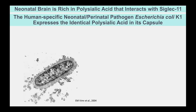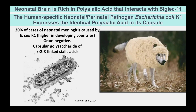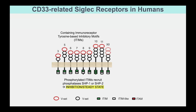A human-specific pathogen called E. coli K-1 — not the garden variety E. coli, but the special K-1 — expresses identical polysialic acid to what you see in the brain. Like a wolf in sheep's clothing, it coats itself in polysialic acid to get into the brain. In fact, 20% of cases of neonatal meningitis are caused by K-1. This bug is making itself look exactly like the brain. If you look at the Siglec receptor in the brain, the polysialic acid is taking advantage of Siglec-11 and shutting down the innate immune cells — the microglia.